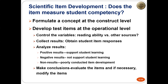Non-results indicate a poorly conducted item development — we didn't control variables, so we didn't test what we were trying to test. Then we make conclusions and evaluate our items: we may find the item was correct, it needs modification, or we need to go back to the drawing board. Item development is similar to formulating a research hypothesis, and the scientific method is the process by which we evaluate things.